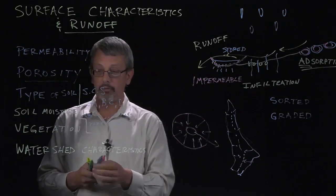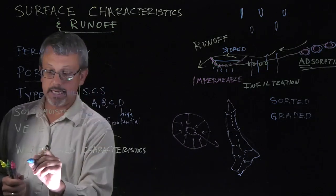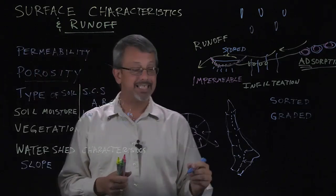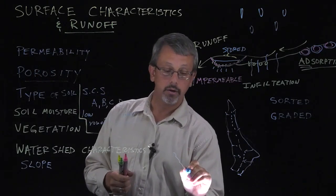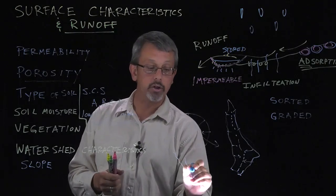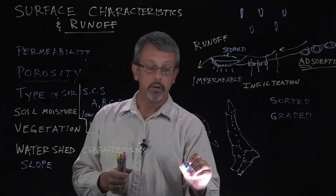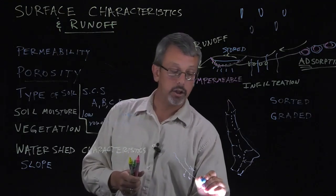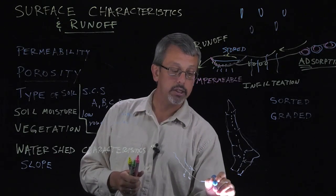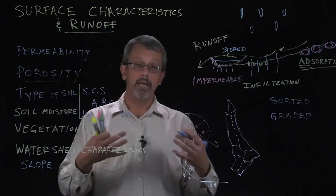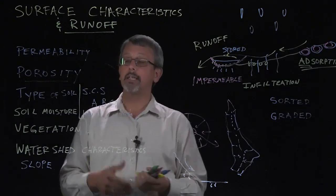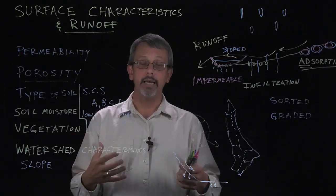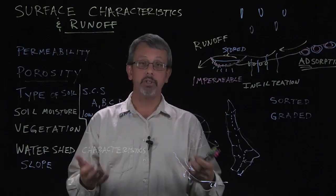And then the last important piece for us to consider in this case is going to be the slope of the area, the slope of the entire watershed. Obviously the steeper the bank is, the more likely it is that the water is going to be redirected and run off before it has a chance to infiltrate and run through. If it's a relatively low gradient, a low slope, then it has more opportunity to both adsorb and to infiltrate. So this is a list of the characteristics that we must think about and consider when we're trying to calculate how much runoff will occur as a result of a precipitation event.